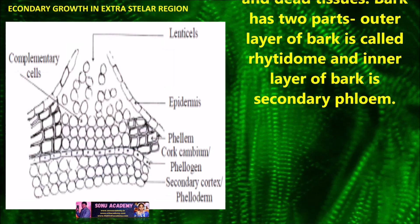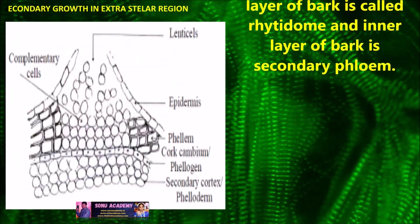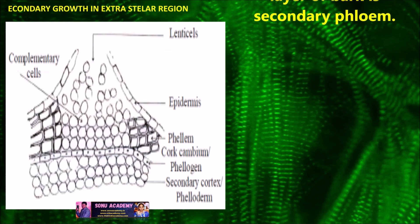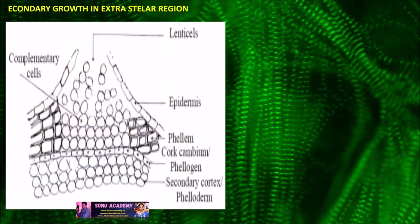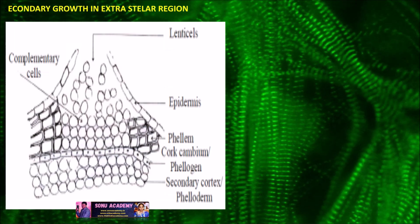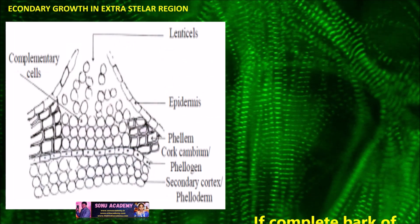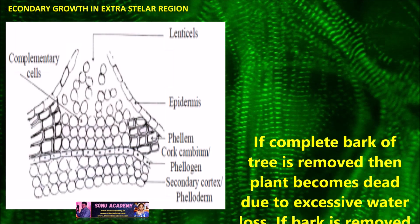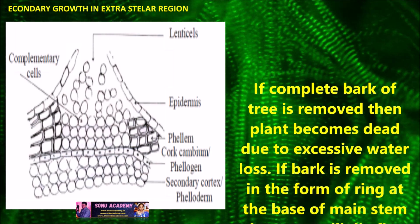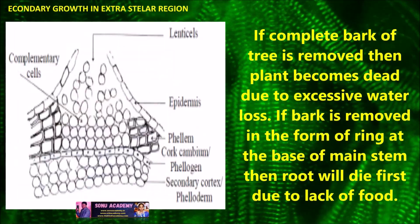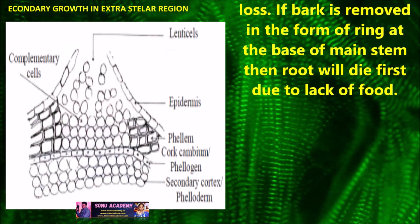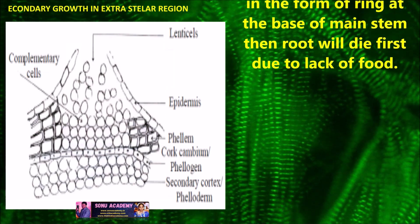Bark has two parts. The outer layer of bark is called the ritidome, and the inner layer of bark is called secondary phloem. If the bark is removed in the form of a ring at the base of the main stem, then the root will die first due to the lack of food.